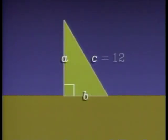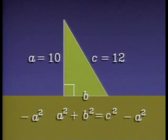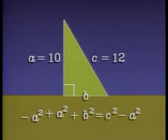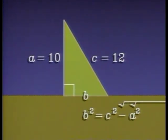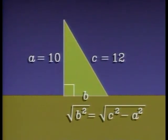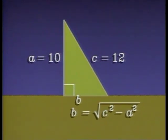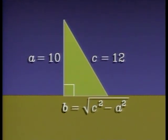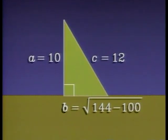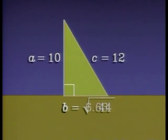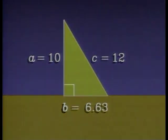Now this time we know the hypotenuse and the length of one leg. The Pythagorean theorem tells us how to find the other leg. The cables should be attached about 6.63 yards out from the tower.